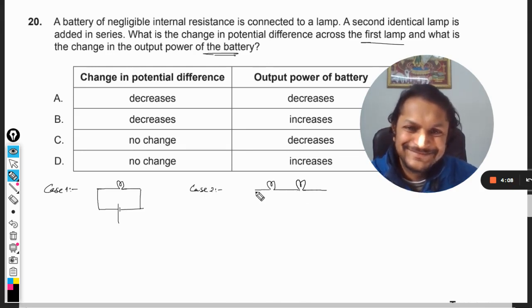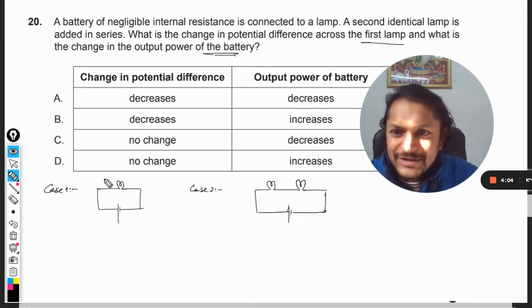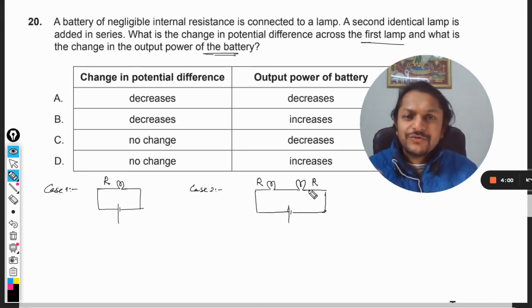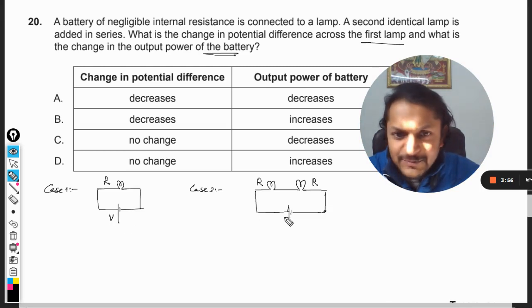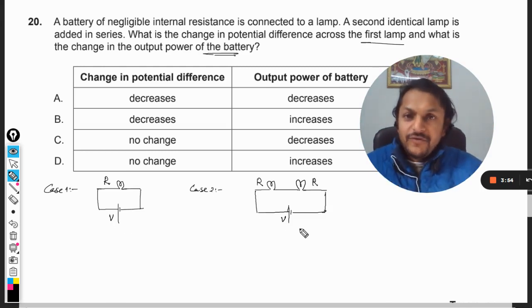They're identical, so I can say that the resistances for both of them is the same. We have assumed it to be R. The output voltage from this battery is V, their EMF.